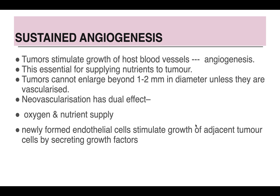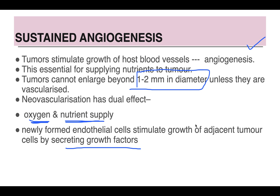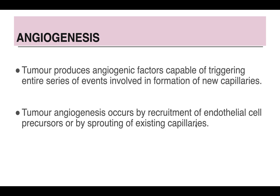Angiogenesis is required for the tumor to survive. Tumors stimulate the growth of host blood vessels — a process known as angiogenesis. Tumors cannot enlarge beyond 1 to 2 mm in diameter unless they are vascularized, because neovascularization provides them oxygen, nutrients, and growth factors from adjacent cells. The tumor produces certain angiogenic factors capable of triggering formation of new capillaries, which can form by recruitment of endothelial cell precursors or by sprouting of existing capillaries.